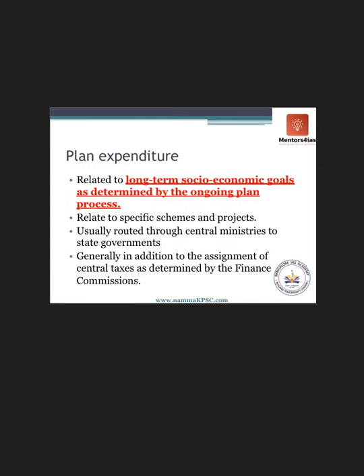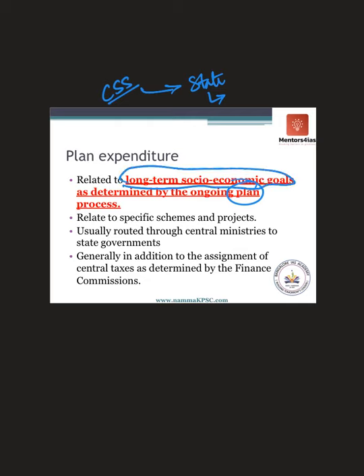Planned expenditure was related to long-term socioeconomic goals as determined by the planning process. The Planning Commission — chaired by the Prime Minister with a Deputy Chairman — would determine resources, set broad objectives, and decide how much to spend on education, healthcare, etc. They would then route that money to state governments through centrally sponsored schemes to achieve long-term socioeconomic goals.